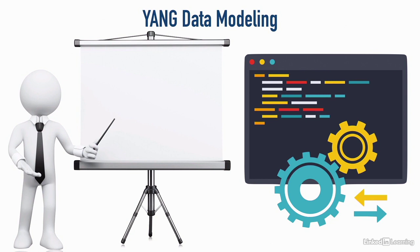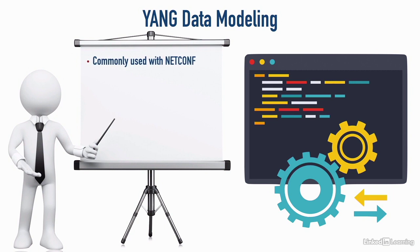But what if we had equipment from multiple vendors? Maybe we've got Juniper gear, Cisco gear, or some other vendor. In that instance, we could use something called NetConf, which we'll talk about later in this course. When we're using NetConf, we'll typically see a YANG data model.